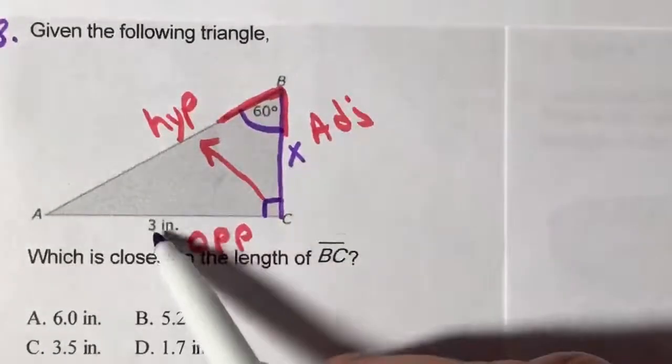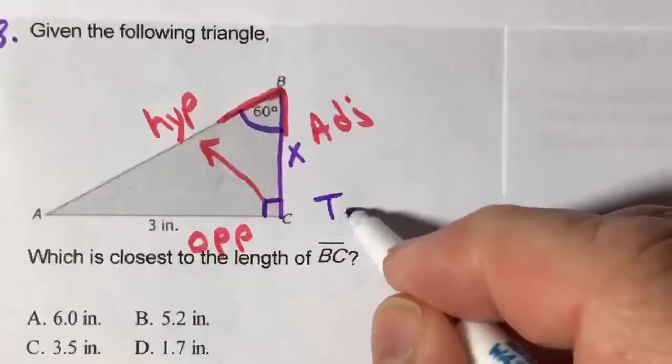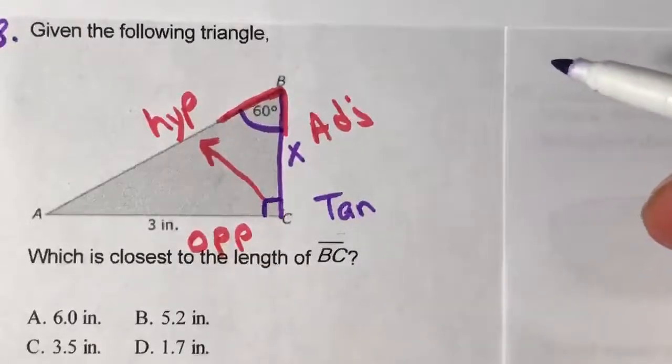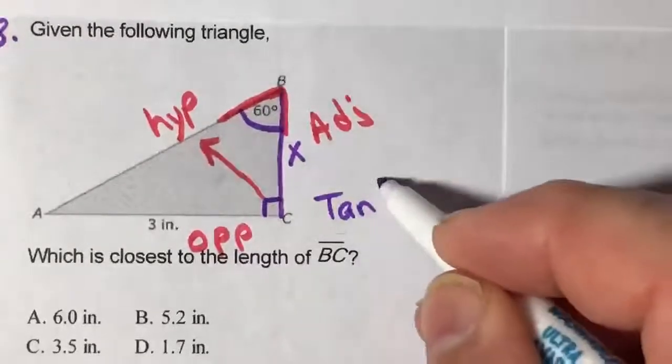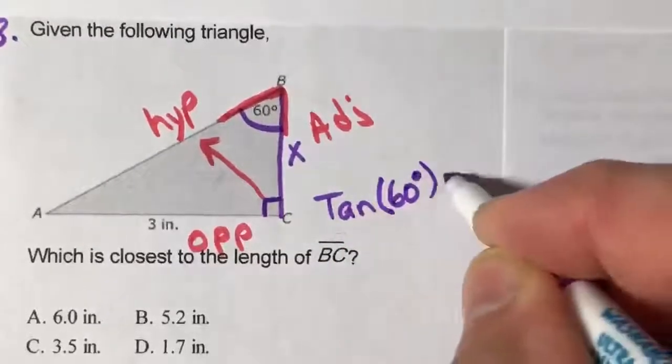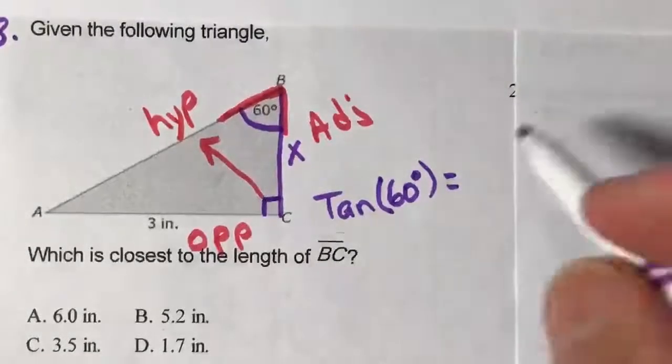And I'm given 3, so that's opposite. So opposite and adjacent is tangent. Okay, you need to be going to that formula chart, locating tangent to remind you that the fraction is always opposite over adjacent.